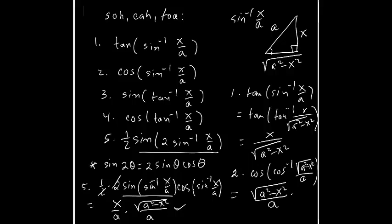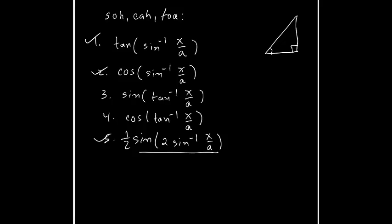We are done with problems one, two, and five using that first triangle. Problems three and four work the same way — I just need a different right triangle. Now looking at tan inverse x over a: using TOA, opposite is x and adjacent is a.